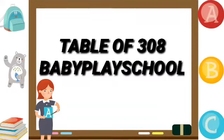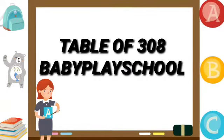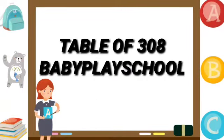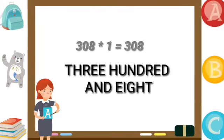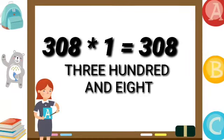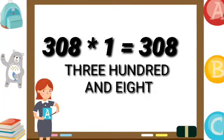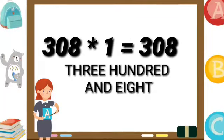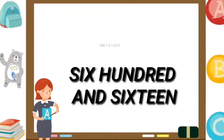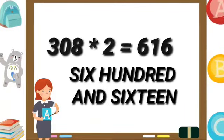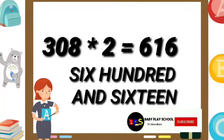Table of 308. 308 ones are 308. 308 twos are 616.